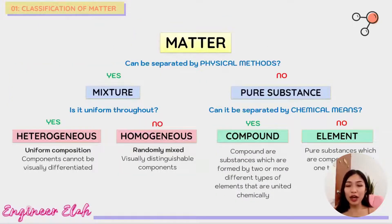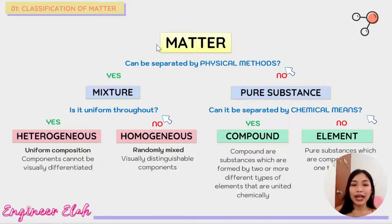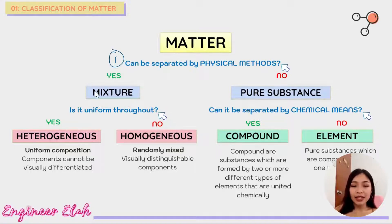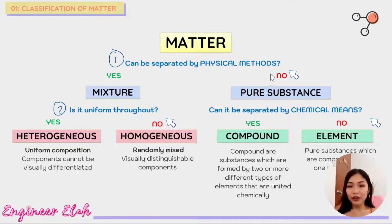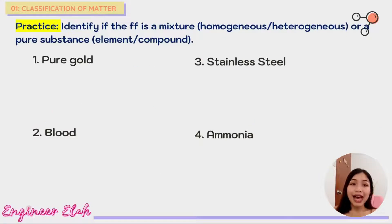So that's the full picture — the complete classification of matter. There are only three questions you need to ask yourself when given a matter to classify. First: can it be separated by physical methods? If yes, then ask: is it uniform throughout? If no to the first question, then ask: can it be separated by chemical means? Now let's have a practice.